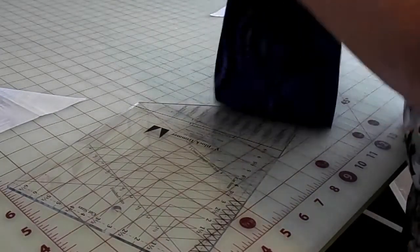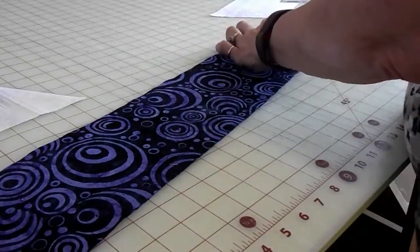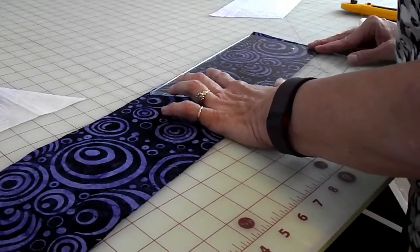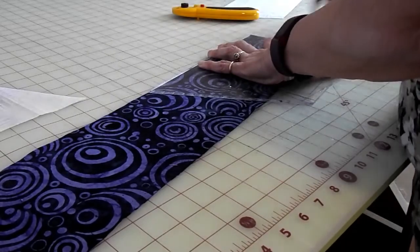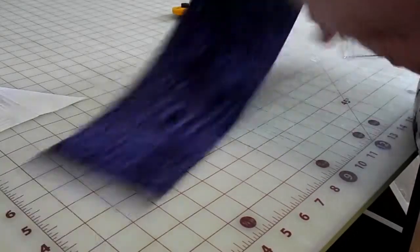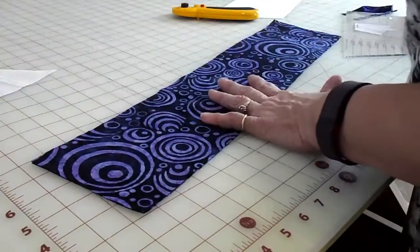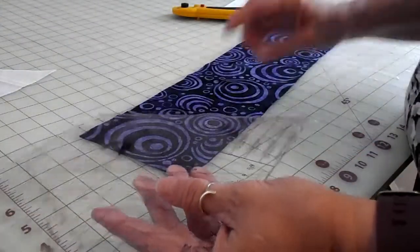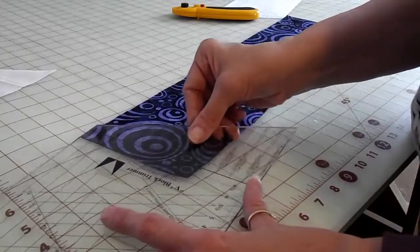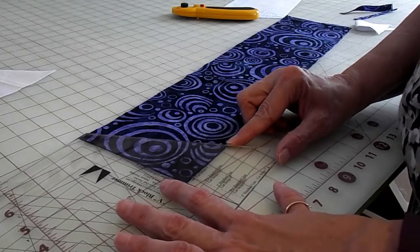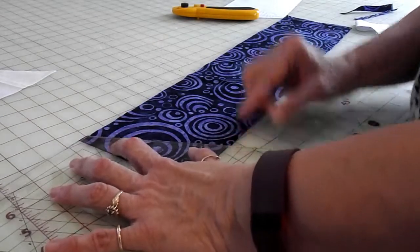After you get that done, you're going to make the outside triangles and this is just a wee tad trickier. The first thing I'm going to do is take off the salvage. Then I'm going to turn it to the left and this time I am going to use the cut line for the side triangles and line up the four-inch finished area.